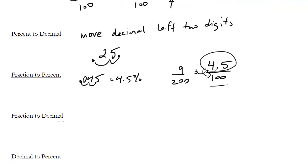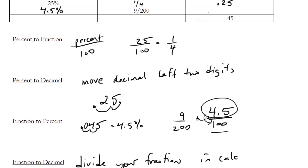How about a fraction to a decimal? Well, we already did that. We divided, so basically just divide your fraction. This is an easy one to get in your calculator. And that gives you your decimal. So we get .045.